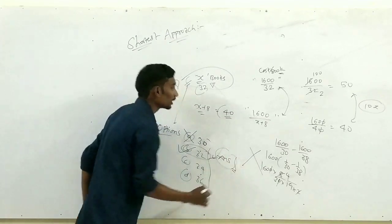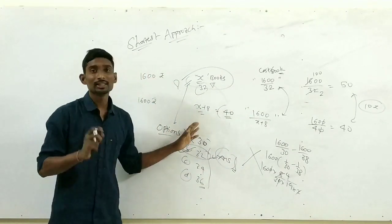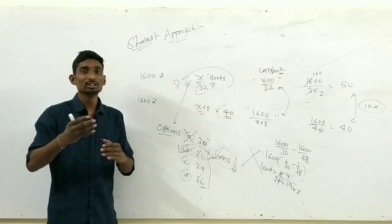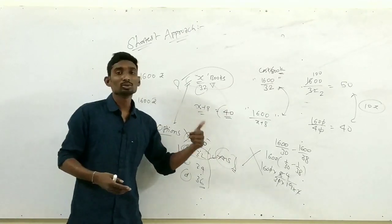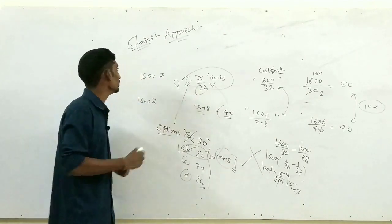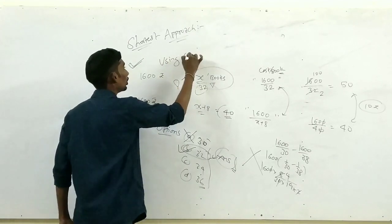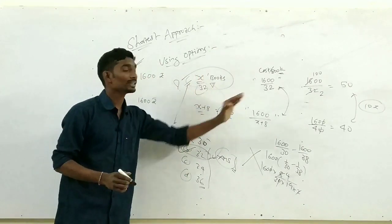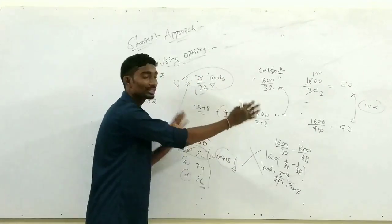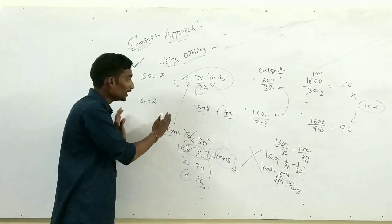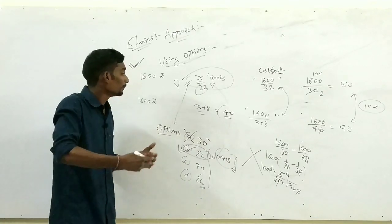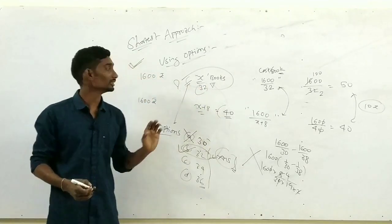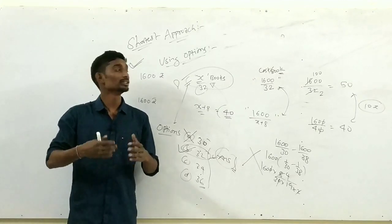This approach takes only 1–1.5 minutes to solve. The remaining time can be used for other general studies questions. I prefer the 'using options' approach. But to know when to use options, you need to understand the other methods too. If you practice all methods, you'll develop this approach — it's easy and the chances of a wrong answer are very low. We'll discuss the next question in the next video.